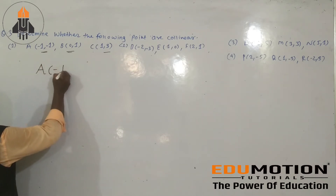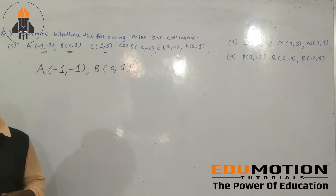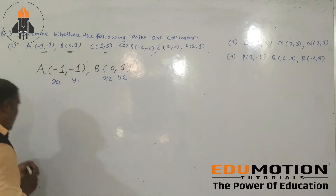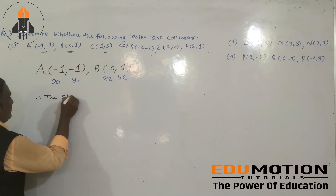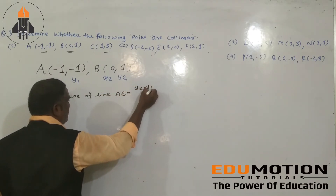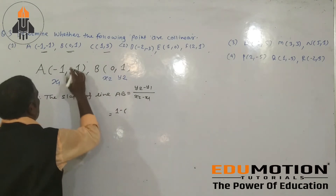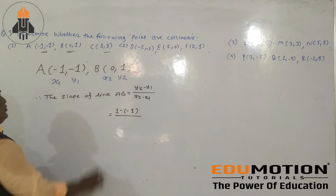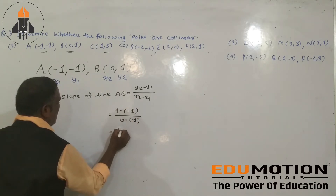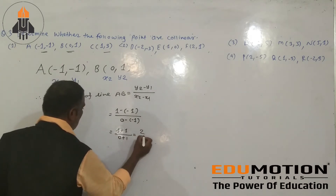We have coordinate A: minus 1 comma minus 1, and coordinate B: 0 comma 1. We label these as x1, y1, x2, y2. Therefore the slope of line AB equals y2 minus y1 divided by x2 minus x1. That is: 1 minus (minus 1) divided by 0 minus (minus 1), which gives 1 plus 1 over 0 plus 1, equals 2 divided by 1, which is equal to 2.